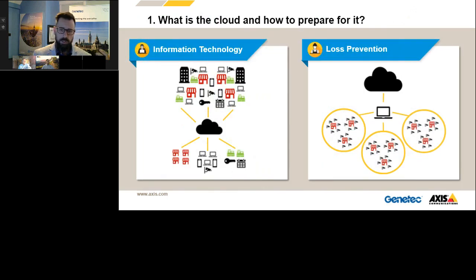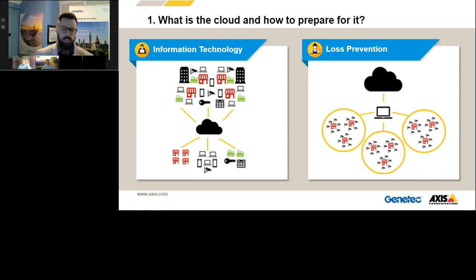Let's define the cloud more clearly. The cloud is a term used to describe a global network of servers that store, manage data, run applications, or deliver content and services — we use cloud applications every day, for meetings, file sharing, and even watching video. The cloud is not a physical entity but a vast network of servers deployed around the globe, connected together and operating as a single ecosystem, making information available anywhere, anytime. In simple terms: servers and software are moved to a managed location, guaranteed to be operational 99.9% of the time.